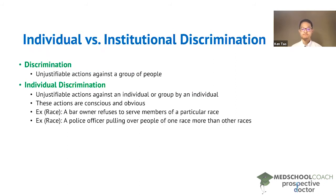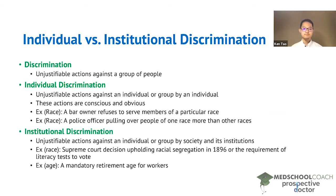With individual discrimination, you can resolve the issue by removing the individual — you could remove the bar owner or the police officer, and that would end the discrimination. Next we have institutional discrimination: this is unjustifiable actions against an individual or group by society and its institutions.